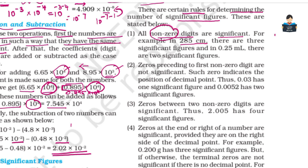For example, in 285 cm, there are 3 significant figures. And 0.25 ml has 2 significant figures.